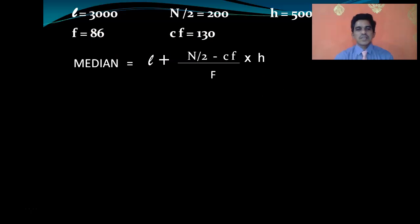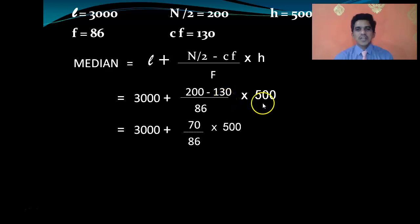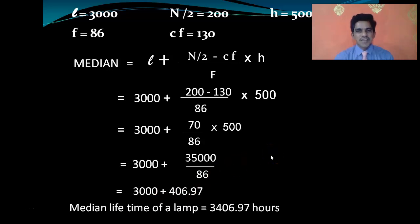The formula is: median equals l plus n by 2 minus cf by f into h. Substitute the values: 3000 plus 200 minus 130 by 86 into 500. This is 3000 plus 70 into 500 by 86. 35,000 divided by 86 gives 406.97. Adding to 3000, the median life of a lamp is 3406.97 hours.